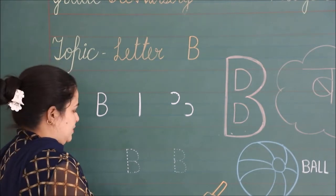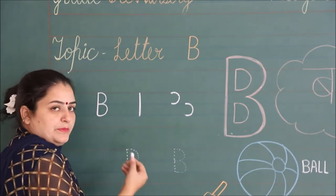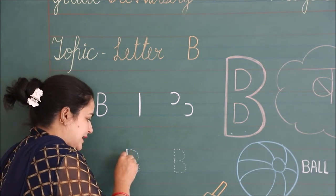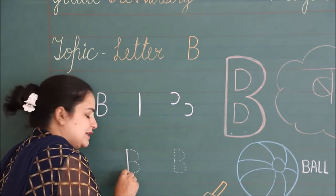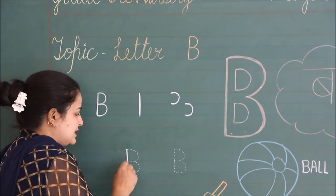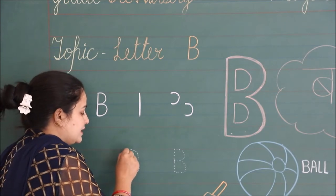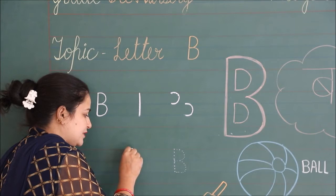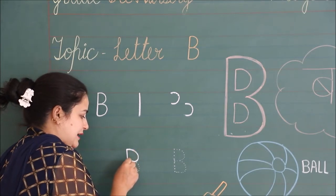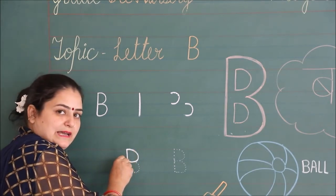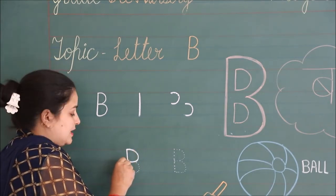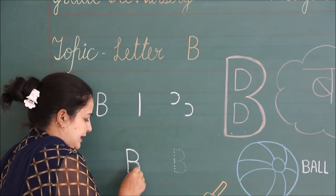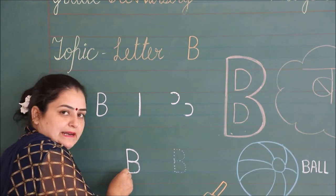अब इसको एक साथ सीखेंगे. Keep your pencil on the first line dot. Make a standing line down to the third line dot. And again keep your pencil on the first line dot. Make a curve from the first line to the second line, touching the standing line.